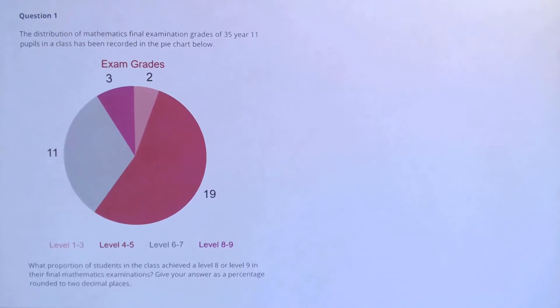Question 1. The distribution of mathematics final examination grades of 35 year 11 pupils in a class has been recorded in the pie chart below. What proportion of students in the class achieved a level 8 or level 9 in their final mathematics examinations? Give your answer as a percentage rounded to two decimal places.